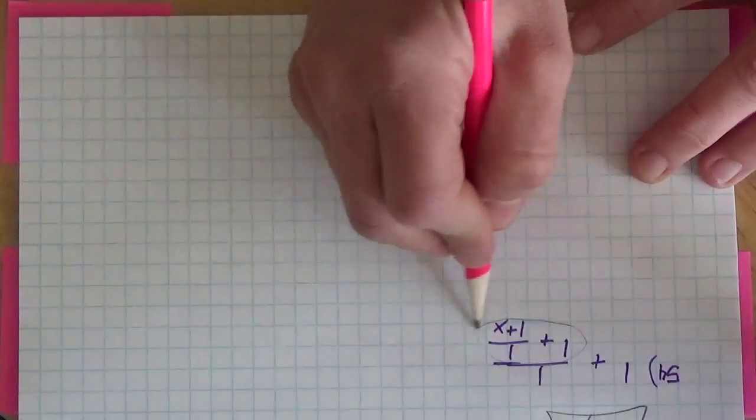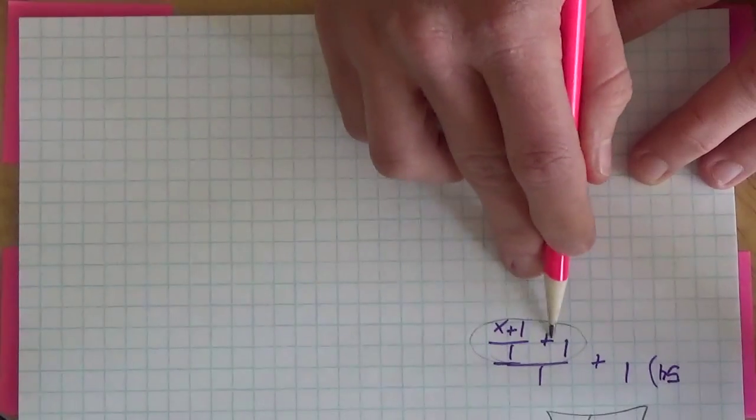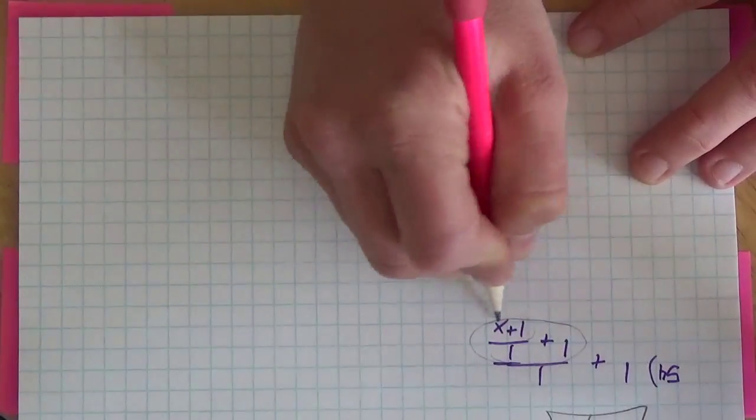Here we go again. So I'm going to zoom in on this guy and just deal with this part first. I need a common denominator to be able to add, so my common denominator is going to be 1 plus x.